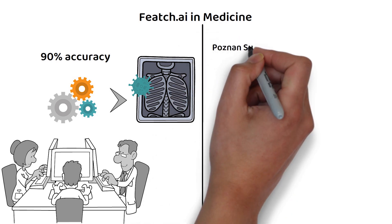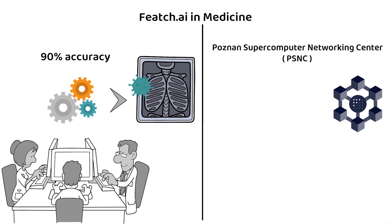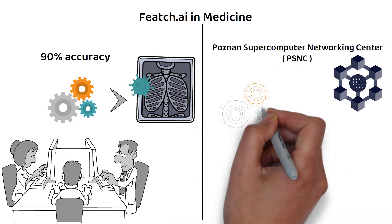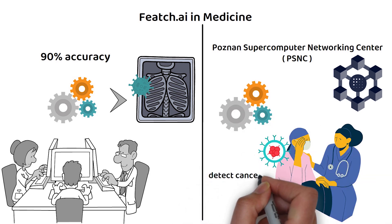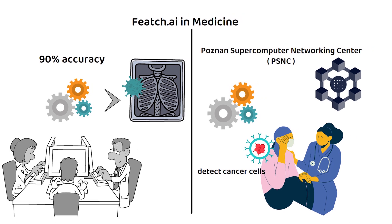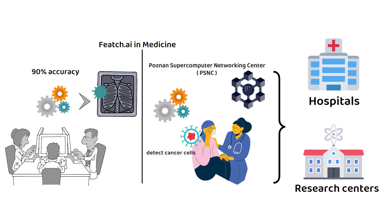In addition to this, working with Poznan Supercomputer Networking Center, both the PSNC and Fetch.ai will work together to train algorithms to detect cancer cells in patients through blood samples and tissue biopsies. These algorithms will then be made available for use by hospitals and research centers worldwide.